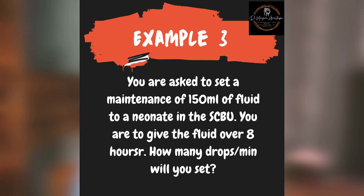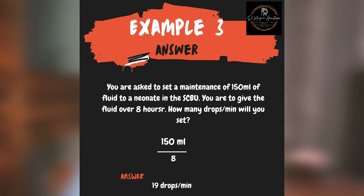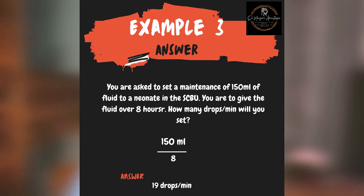You are asked to give a maintenance of 150 mls of fluid to a neonate in the SCBU over eight hours. How would you set the solution? Since we are giving 150 mls of fluid over eight hours, that translates to 150 mls over 8 multiplied by 60, multiplied by 60 (the drop factor). The 60s cancel each other, giving us 150 over 8, which is approximately 19 drops per minute.